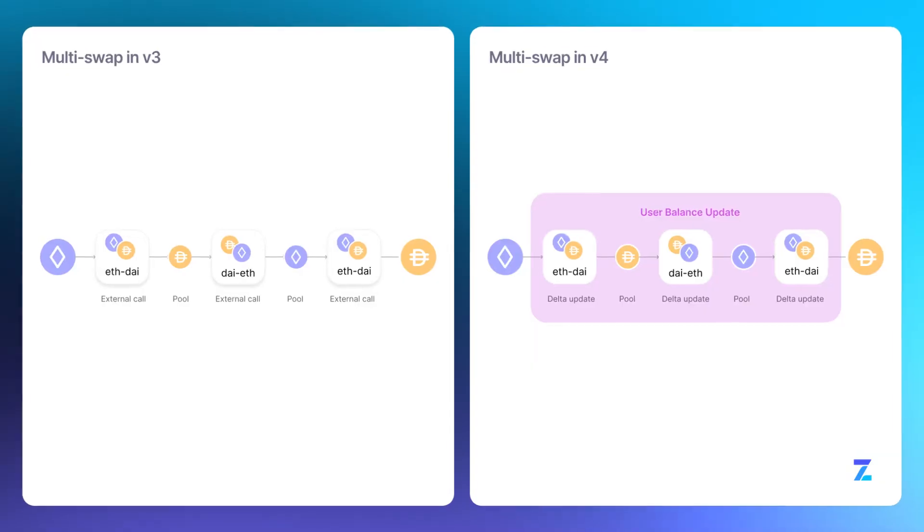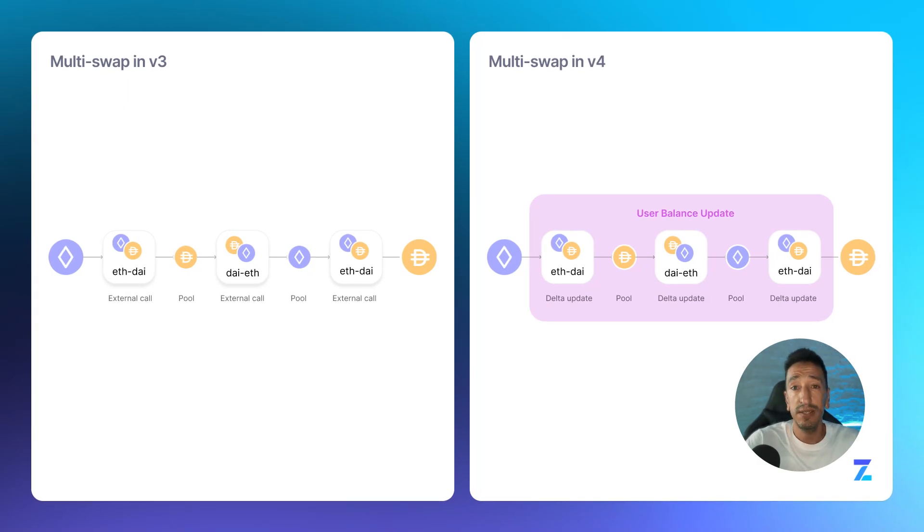Flash accounting is another major upgrade. This system optimizes multi-swap operations by updating just the net balances instead of making a transaction after each step. At the end of the process there will be just one update synchronizing the balances with the assets, avoiding multiple transfers after each step and greatly reducing gas usage.